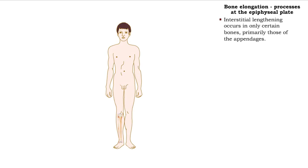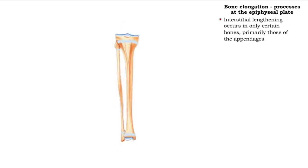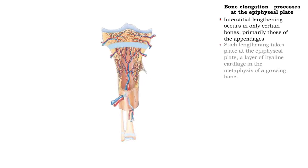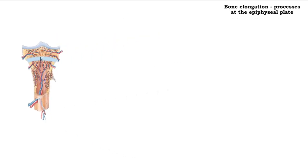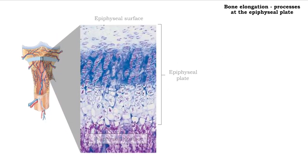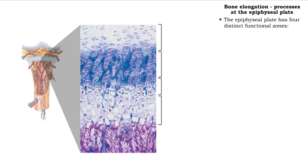While all bones undergo bone widening, only certain bones, primarily those of the appendages, undergo interstitial lengthening. The process of bone lengthening takes place at the epiphyseal plate, which consists of four distinct zones.